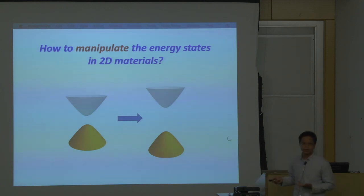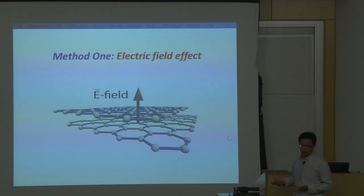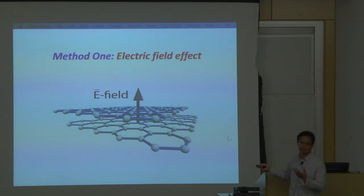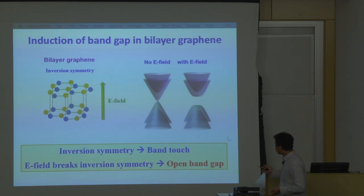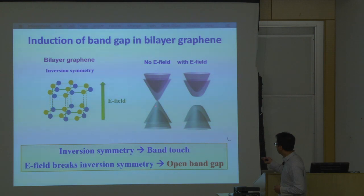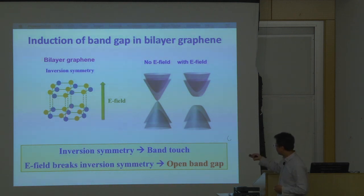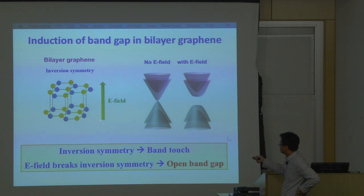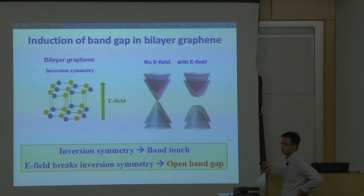There has been a lot of progress in the past decade. When I was a student at Columbia, we spent much time using the electric field effect to tune the band gap size in graphene. For example, in bilayer graphene, there is no band gap — the conduction band and valence band touch each other. This degeneracy is because of the inversion symmetry of the crystal; the two layers are related by inversion symmetry. But if you apply an electric field through electrostatic gating, you can break the symmetry and lift the degeneracy, opening the band gap.